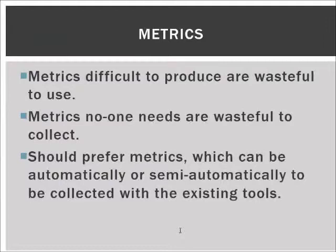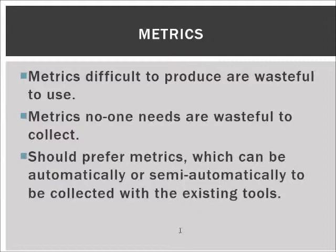If there are metrics which are not used — for example, some information that is systematically bypassed or not actually used in test management — then why are we still collecting it? Just like irrelevant documents get dropped when we run out of time, metrics which are not useful are simply a waste of time to collect. We should focus on information which is actually useful, and even then prefer metrics which can be collected automatically from databases, or semi-automatically by collecting from databases and doing calculations manually.